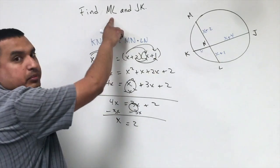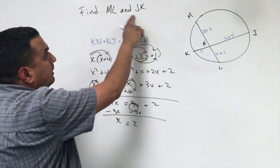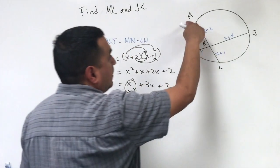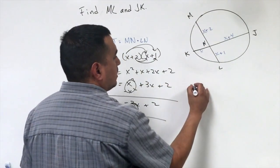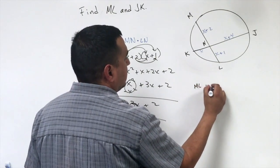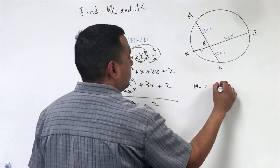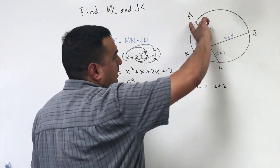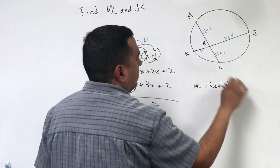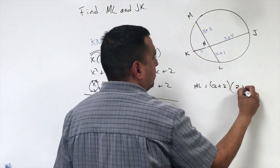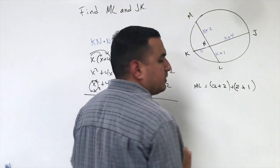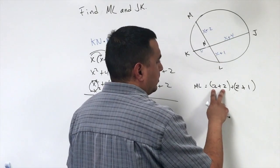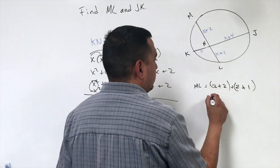Now it's asking me for ML or the length of M to L and the length of J to K. So M to L, I'm going to have to substitute this in. So ML is going to equal 2 plus 2 for this MN part. And then for the LN part, that's going to be 2 plus 1. And you add both pieces together. So this is 4, this is 3. So 4 plus 3 would be 7.